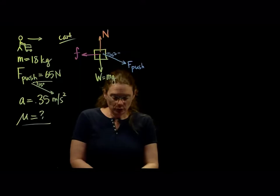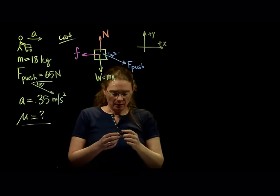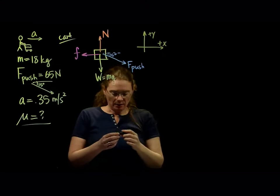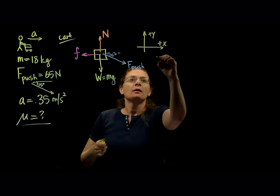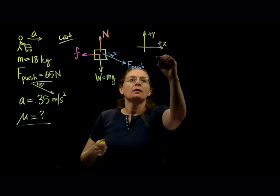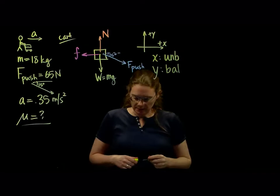Choose a coordinate system that aligns with the direction of the acceleration. We're accelerating in the horizontal direction, so I'm choosing a coordinate system that matches with that. Next, figure out if the forces are balanced or unbalanced in each direction — that's Newton's second law. Balanced forces mean no acceleration; unbalanced forces mean acceleration. We do have acceleration in the x direction, so those forces are unbalanced. In the y direction, there's no motion up or down, so those forces are going to be balanced.